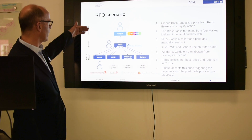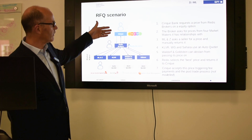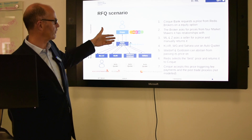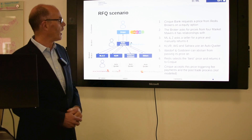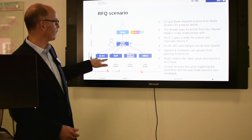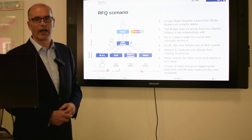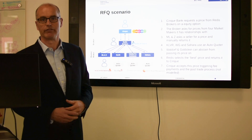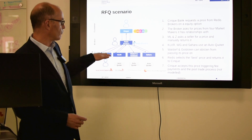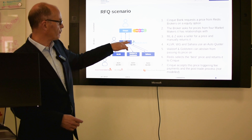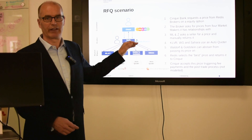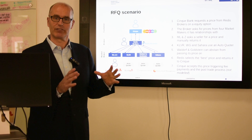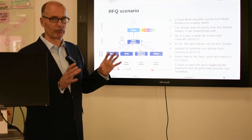Very simply, we have a customer, a broker and a market maker. Today we've invented a little ecosystem, so we have CinqueBank making a request for a quote on an equity option to Re-disk Brokers, who's going to farm it out to four market makers: MLNZ, KLVR, Waldorf & Goldstein, and Sahara Investments. These will respond with quotes. Re-disk Brokers will select the best one and return that to the buyer, who will then accept it. And that's where we'll leave the scenario today, leaving the post-trade for some other time.